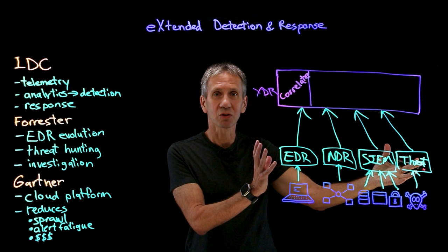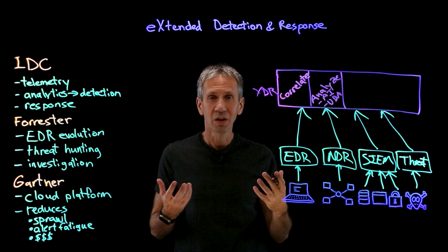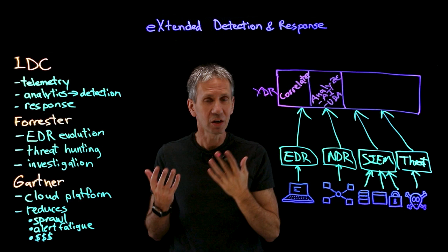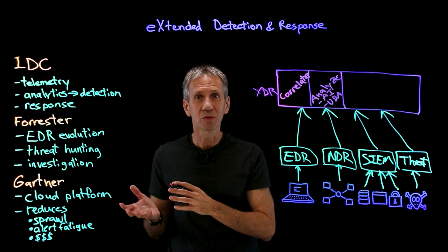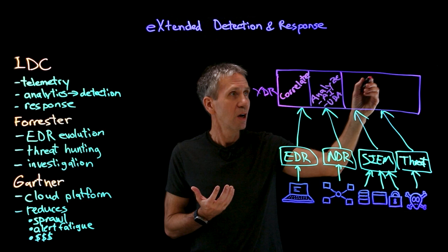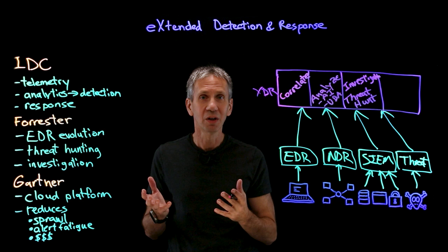One component is correlation — taking information across all of these systems and correlating them to give you a single view rather than lots of different views. It also adds the ability to analyze information; we might use artificial intelligence to better understand the underlying cause of the threat. We might also add a UBA — a User Behavior Analytics capability — that looks for abnormal activities that certain users are doing that don't match their peer groups. We could also add the ability to investigate: reactively going out to see who's doing this and what the extent of the damage is.